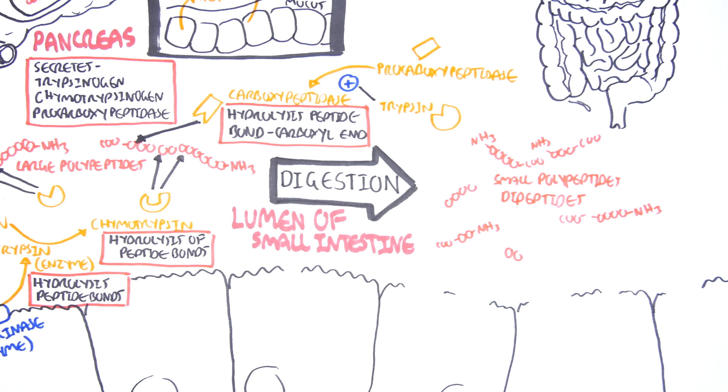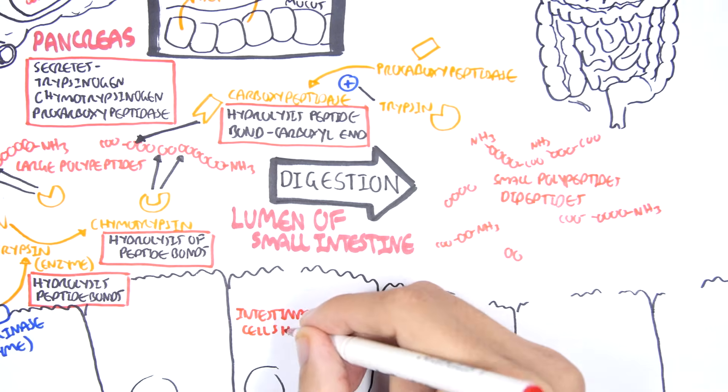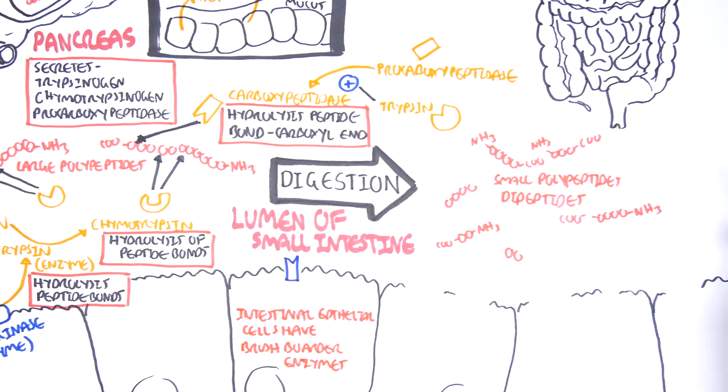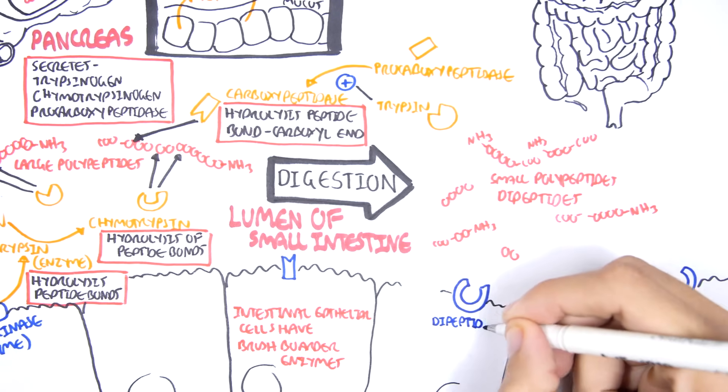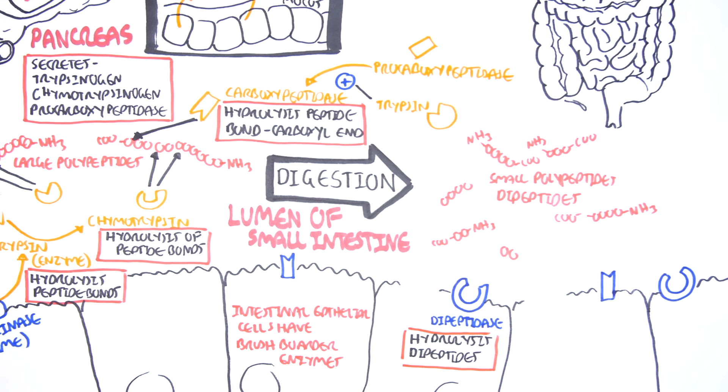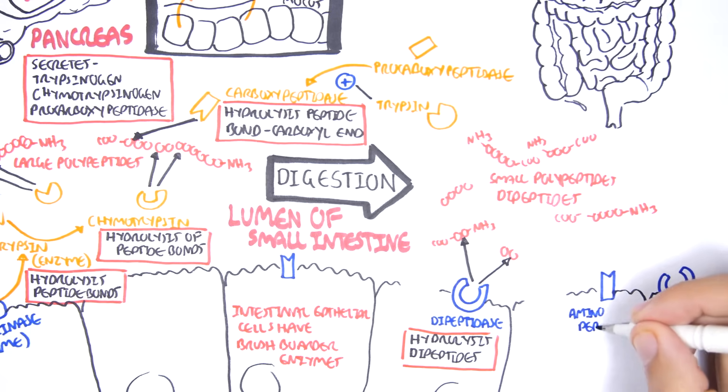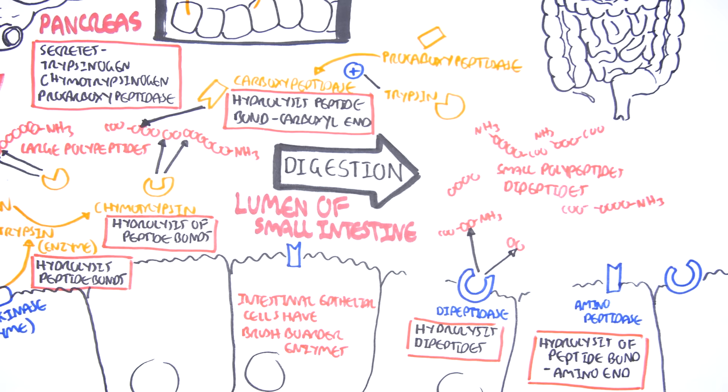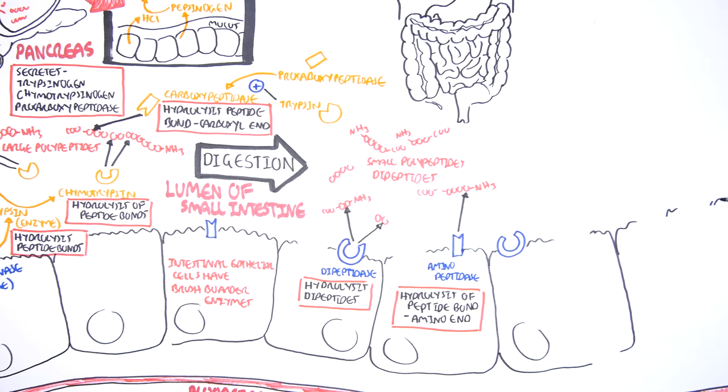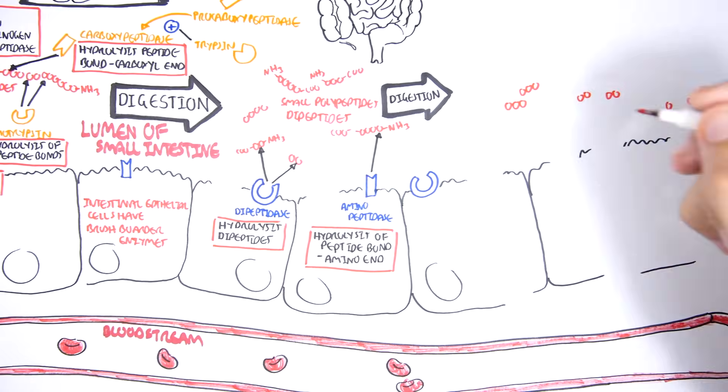The body needs to break down these small polypeptides further in order for the body to absorb them. The last part of protein digestion occurs on top of the intestinal cells because on top of the intestinal cells there are these special enzymes called brush border enzymes. We will focus on the brush border enzymes that specifically hydrolyze peptide bonds. These enzymes are the dipeptidases, which hydrolyze dipeptides, and the other main brush border enzyme are aminopeptidases, which hydrolyze peptide bonds from the amino terminal of the protein. These small polypeptides will be digested further into tripeptides, dipeptides, and amino acids.